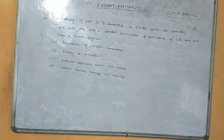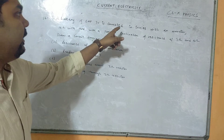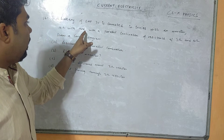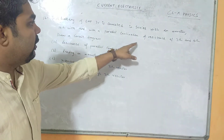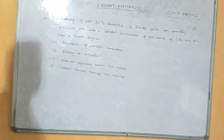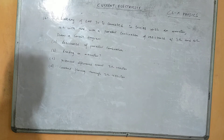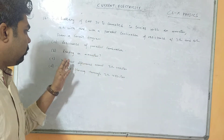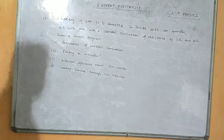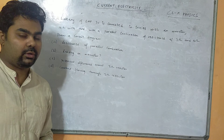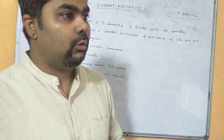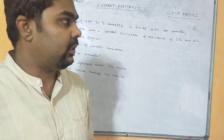The next question: a battery of EMF 3V is connected in series with an ammeter, a 10 ohm wire, and a parallel combination of resistances of 3 ohm and 6 ohm. We are asked to draw a circuit diagram, calculate the resistance of the parallel combination, the reading on the ammeter, the potential difference across the 3 ohm resistor, and the current going through the 3 ohm resistor.